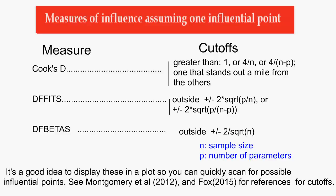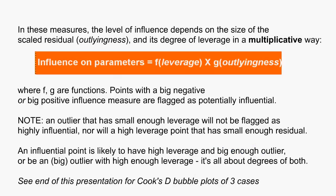In these measures, the level of influence depends on the size of the residual and its degree of leverage in a multiplicative way. This means that an outlier that has a small enough leverage will not be flagged as influential, nor will a high leverage point that has a small enough residual. Such points will not affect the estimated parameters that much. That's why I said at the start that influential points matter more than outliers. An influential point is likely to have high leverage and be a big enough outlier, or be an outlier with high enough leverage — it's all about degrees of both.